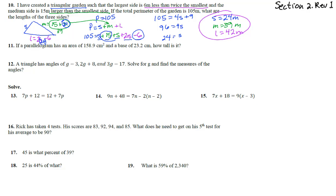Number 11: a parallelogram has an area of 158.9 centimeters squared and a base of 23.2 centimeters. We need to find the height. The formula is area equals base times height, so 158.9 equals 23.2 times h.